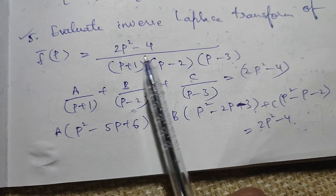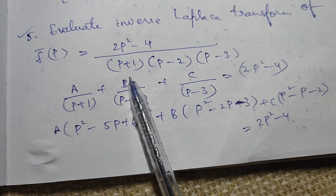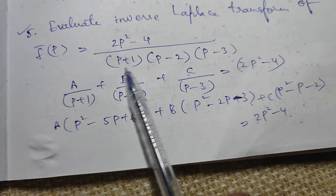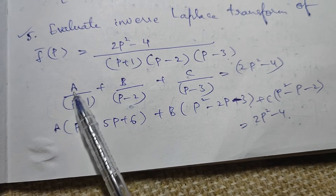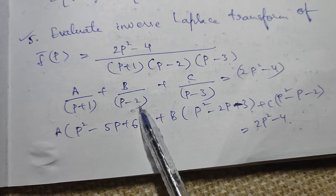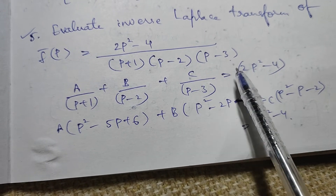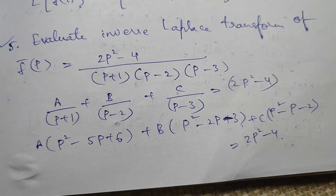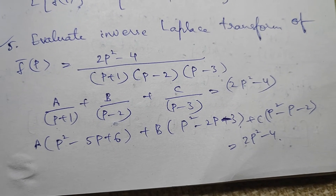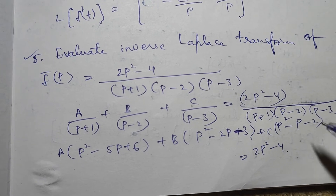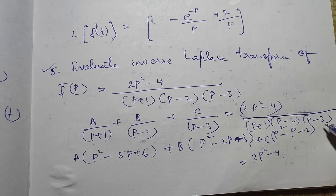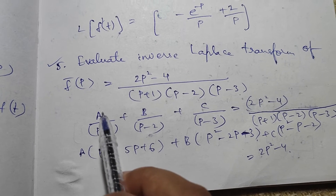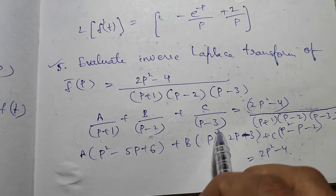We will take this term and factorize it into partial fractions. So we write A/(p+1) + B/(p-2) + C/(p-3), which equals 2p² - 4 divided by (p+1)(p-2)(p-3).